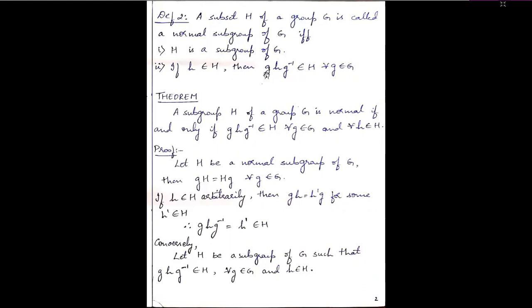Now let us prove this definition as a theorem. Theorem one says: a subgroup H of a group G is normal if and only if gHg⁻¹ belongs to H for all g belonging to G and for all h belonging to H. Since we have an if-and-only-if condition, we first assume H is normal and prove that gHg⁻¹ belongs to H, and conversely assume gHg⁻¹ belongs to H and prove H is normal.